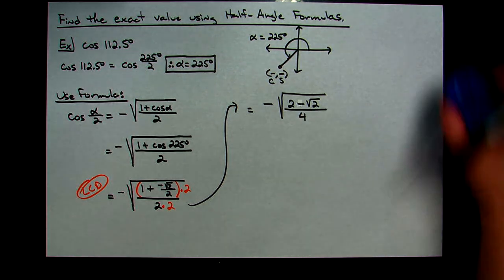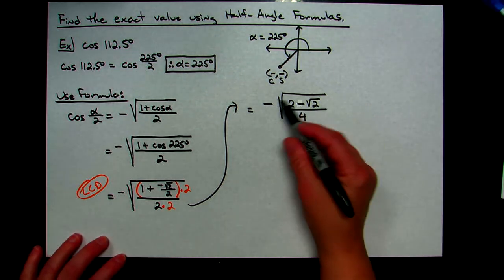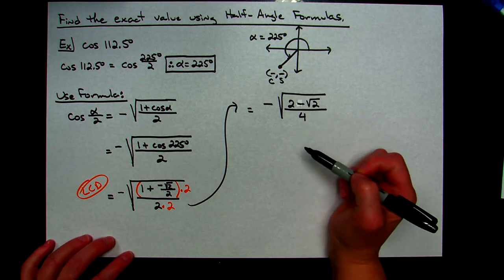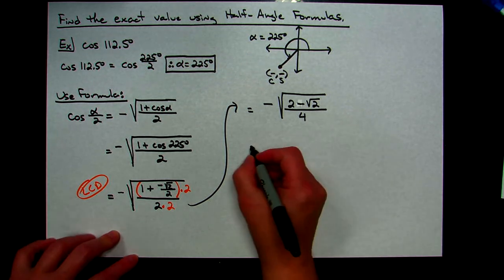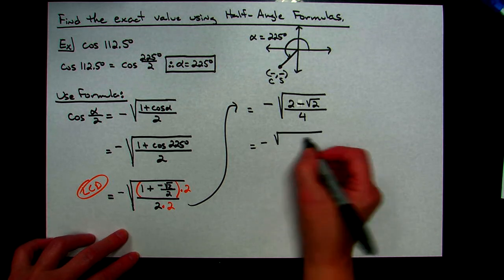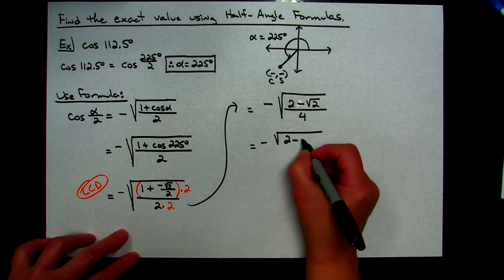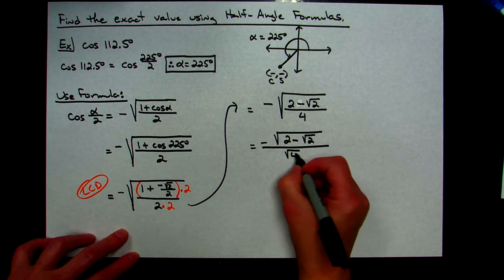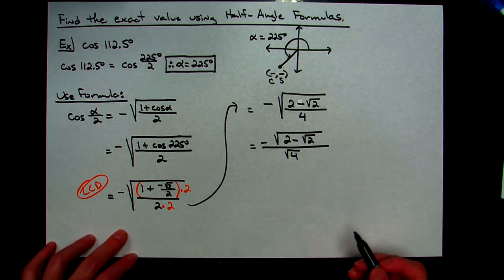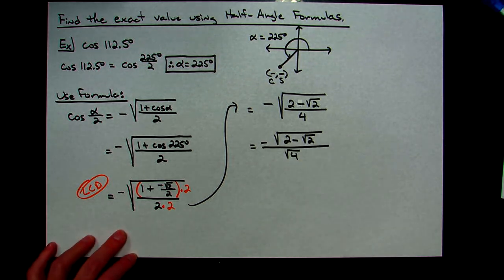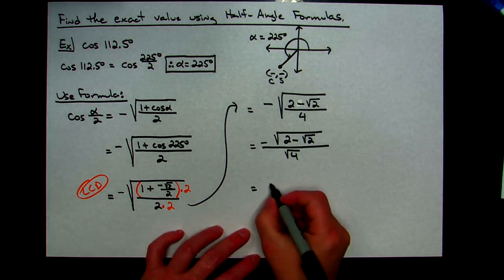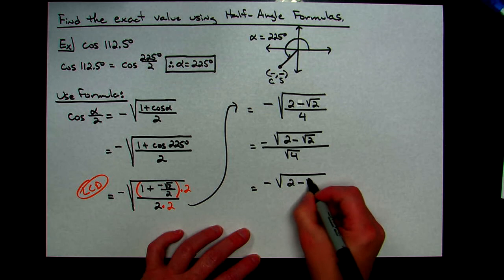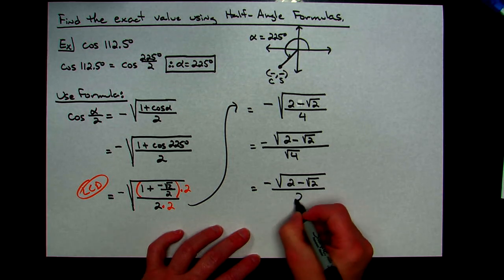Remembering that a large radical can be separated into a radical on top and a radical on the bottom, I can split it: square root of (2 − √2) becomes √(2 − √2) in the numerator over √4 in the denominator. The square root of 4 simplifies to 2. So the final answer is negative square root of (2 − √2) all over 2.